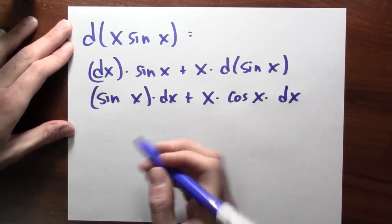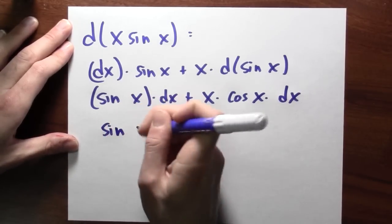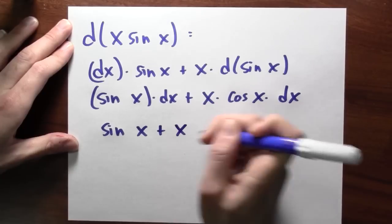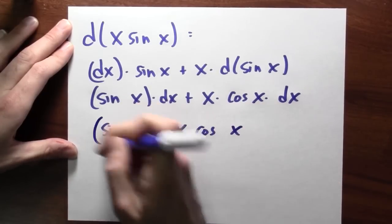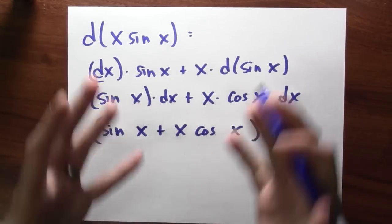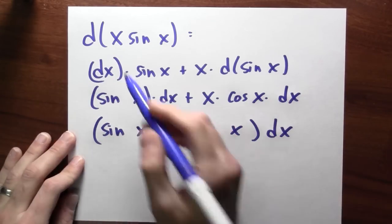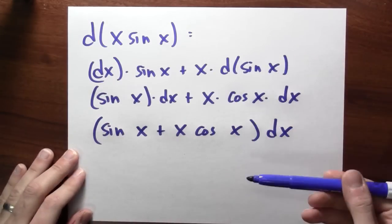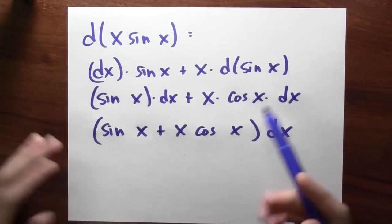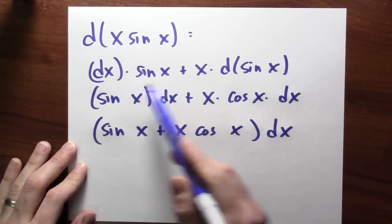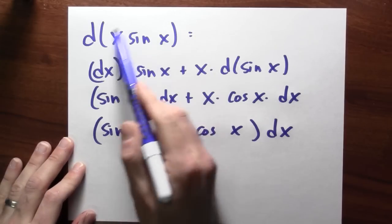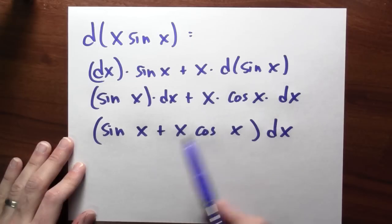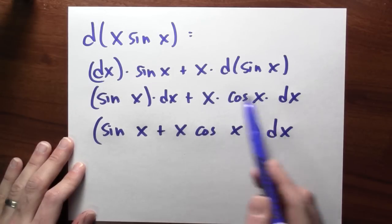Now, if I like, I could factor out the dx and I could write this as sine x plus x cosine x times dx. Now, of course, I haven't done anything new here, right? I mean, I could have just differentiated x sine x. But the point is that I'm writing it down without ever taking derivatives. I'm sort of using the rules for how to compute differentials, right? Like the differential product rule and the fact that the differential of a function is the derivative times dx.